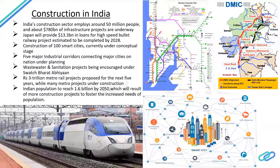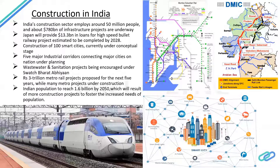For the bullet train project, Japan is going to finance $13.3 billion as a loan and it is estimated to be completed by 2028. There is a proposal for 100 smart cities which is currently in the conceptual stage. Five major industrial corridors connecting major cities of the nation are under planning.